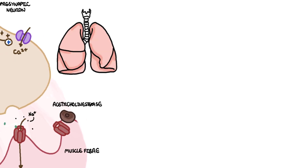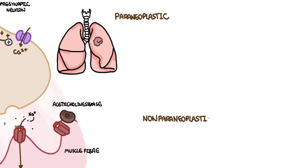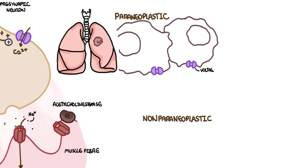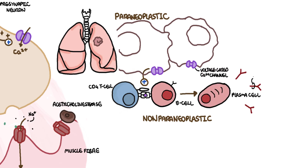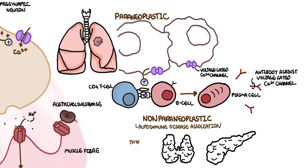The causes of Lambert-Eaton Myasthenic Syndrome can be either paraneoplastic or non-paraneoplastic. The thought is that the immune system mounts a response to voltage-gated calcium channels from cancer cells, creating antibodies against the voltage-gated calcium channels, which have a predilection for specific types of channels found in the neurons. Non-paraneoplastic causes are associated with autoimmune diseases such as Graves' disease and type 1 diabetes mellitus.